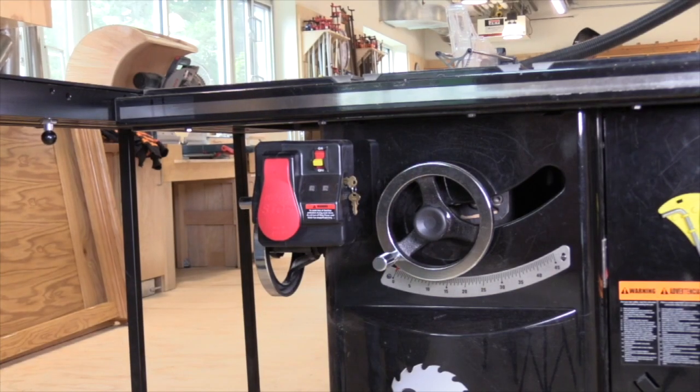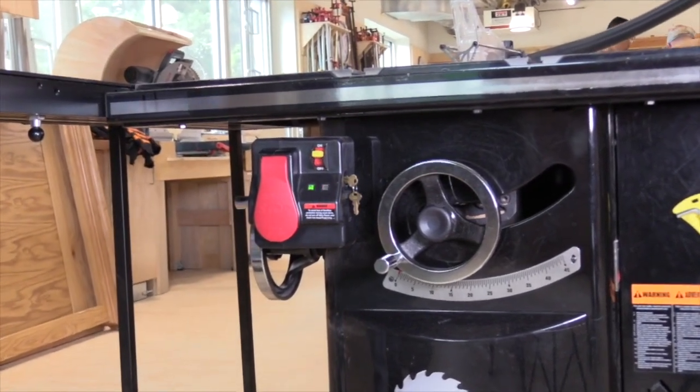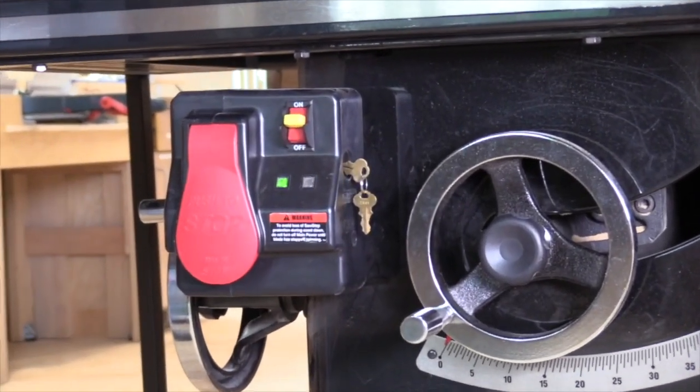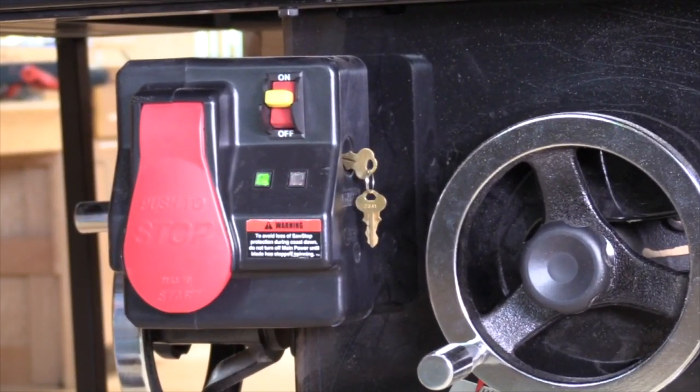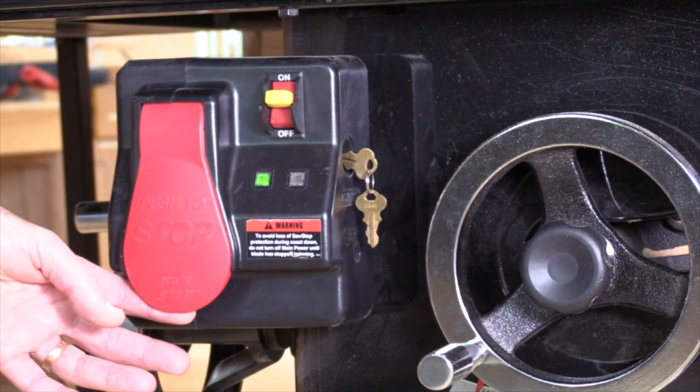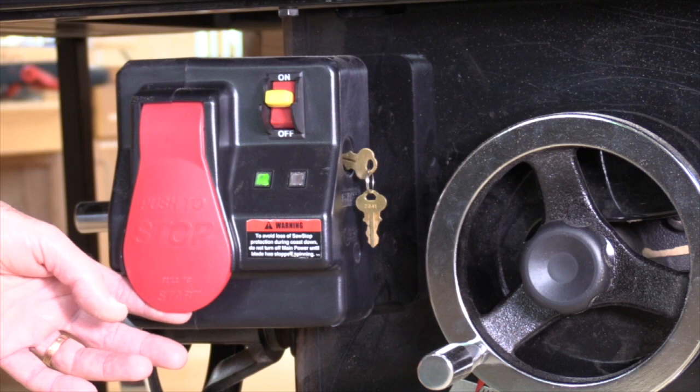Once the saw is energized, turn on the power switch, and we'll see a pair of colored lights. The red is flashing—that's the initialization process. When we have solid green, we're ready to go. Turn the saw on by pulling out the red paddle. You can push that red paddle to stop with any part of your body.